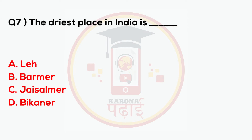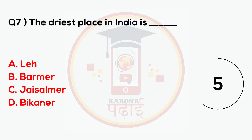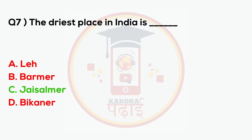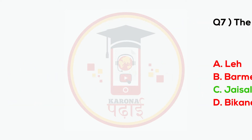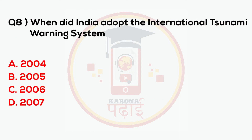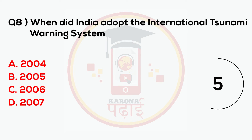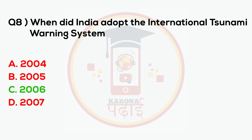The driest place in India is Jaisalmer. When did India adopt the international tsunami warning system? 2006.